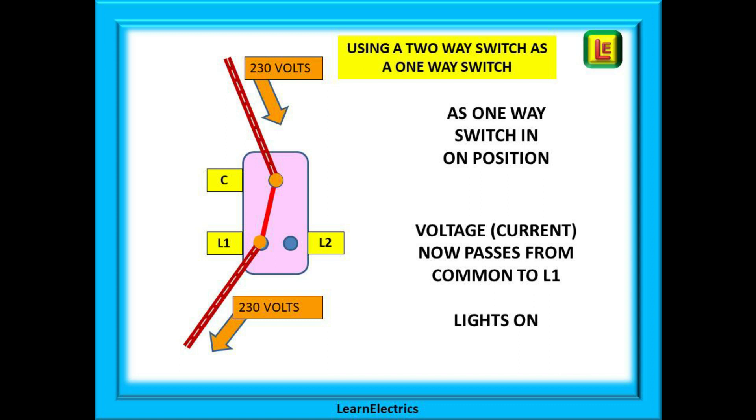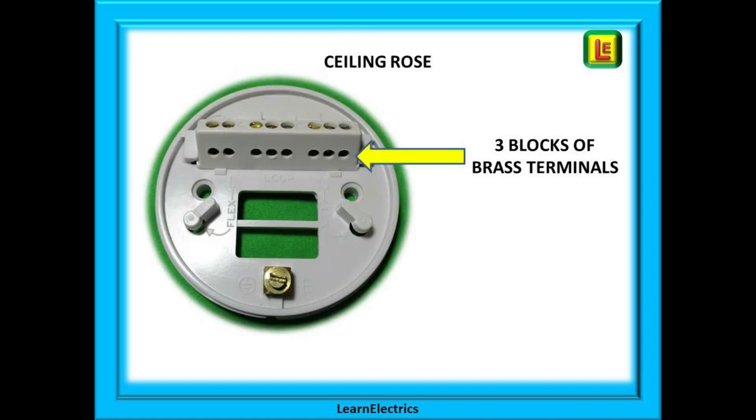Of course we could choose to connect between common and L2 as long as one wire goes to common. The next part takes place inside the ceiling rose so let's look at that next.